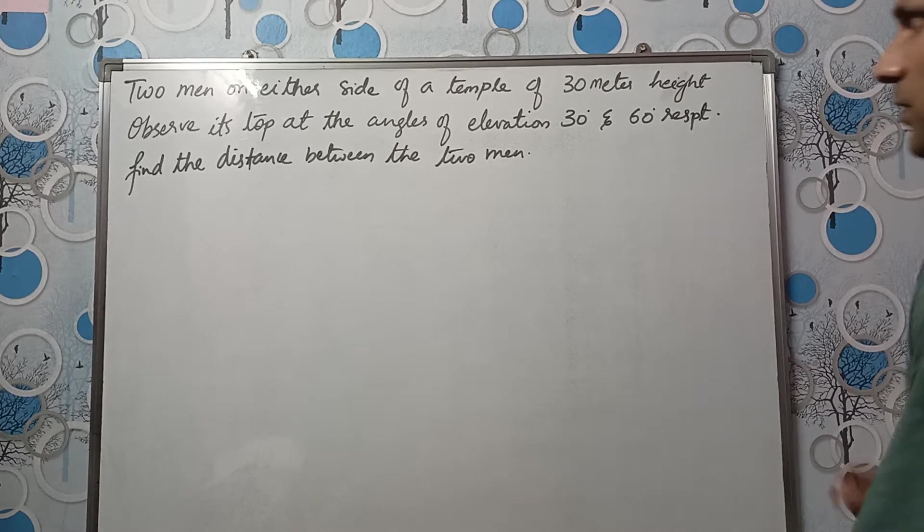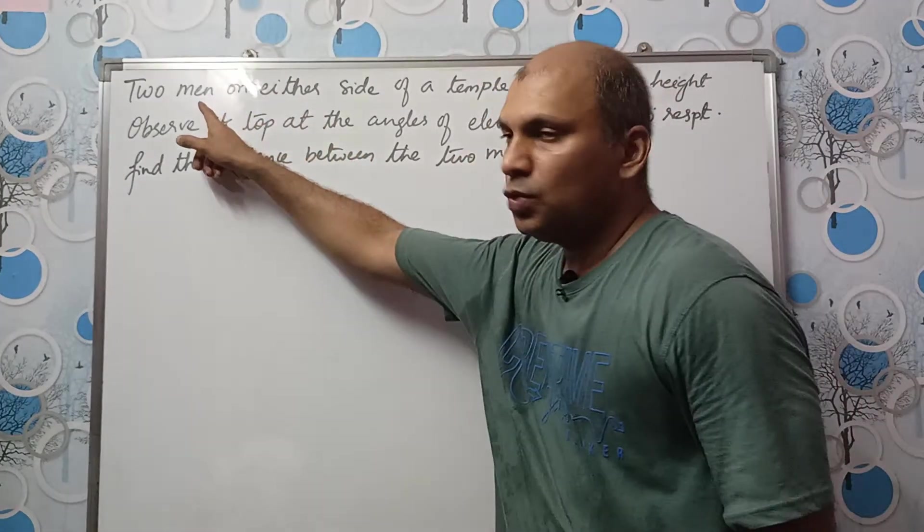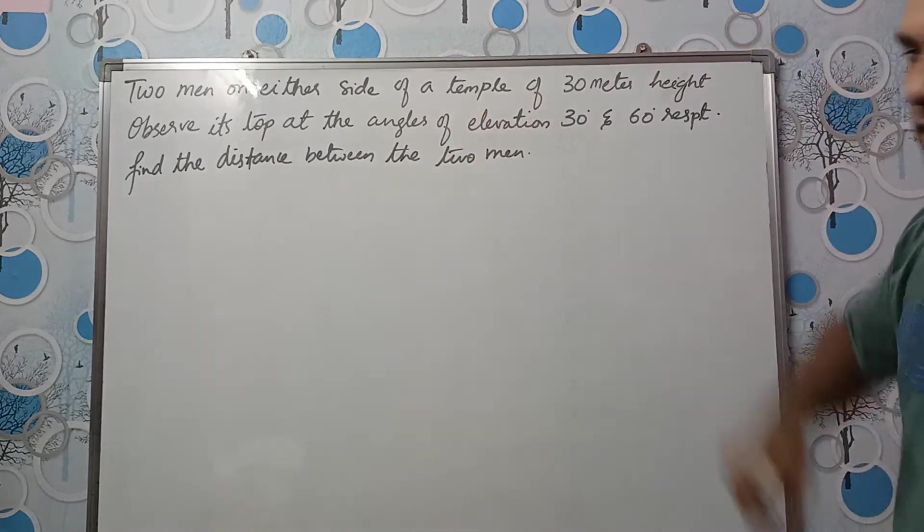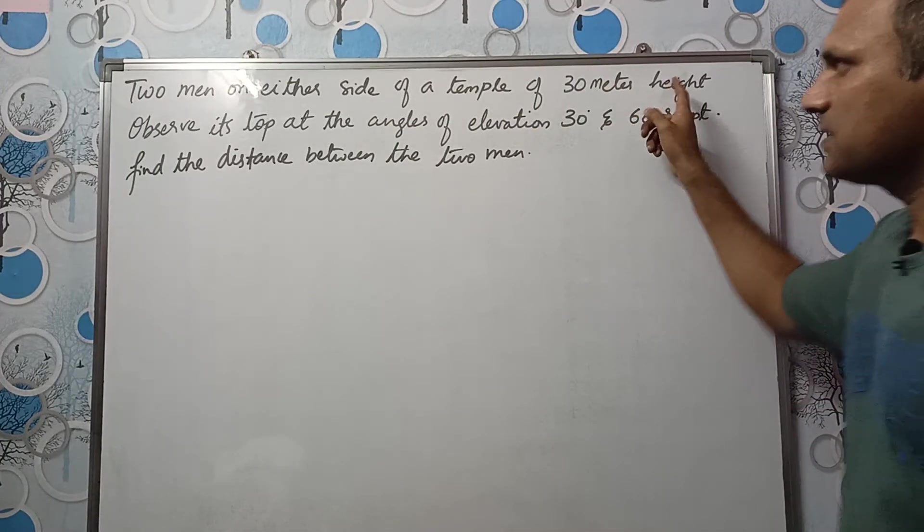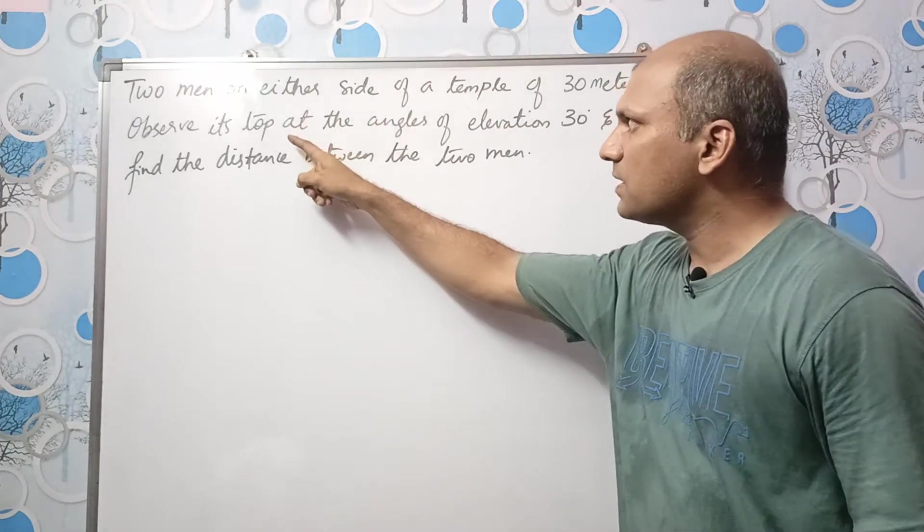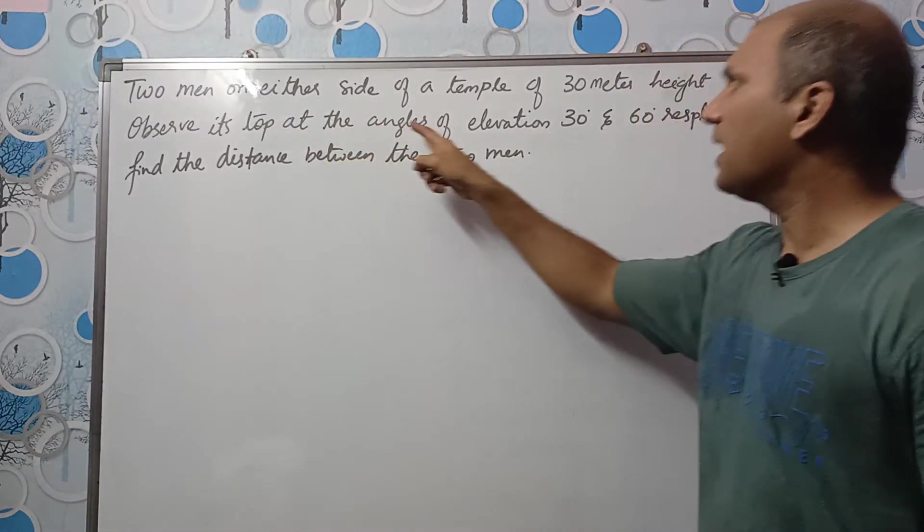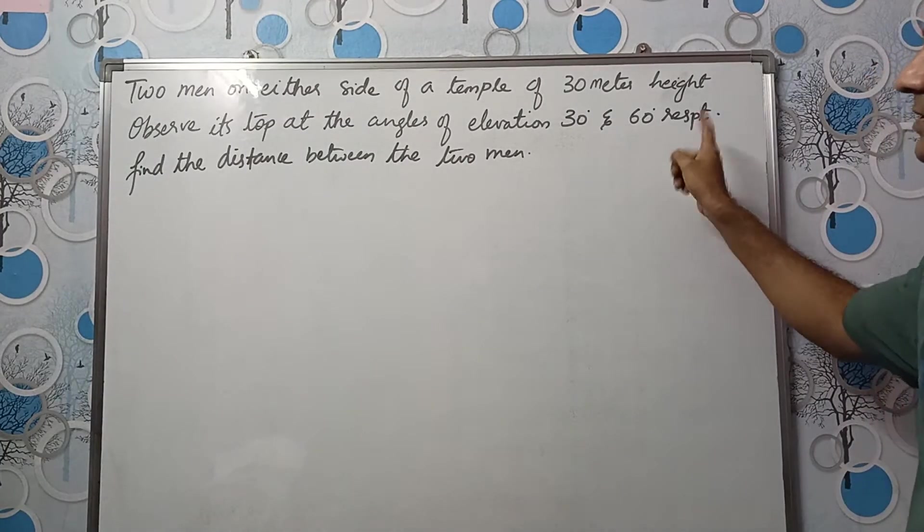Hi students, in this video we will solve this problem. Two men on either side of a temple of 30 meters height observe its top at an angle of elevation 30 and 60 respectively.